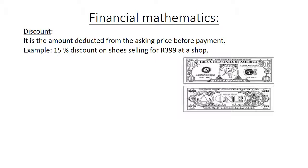15% discount on shoes selling for R399 at a shop. You first have to calculate your discount, which is 15%, which means it is 15 over 100 times 399 Rand, which equals 59 Rand and 85 cents. So you will pay 399 Rand minus the discount, which is 59 Rand and 85 cents, and that equals to 339 Rand and 15 cents.